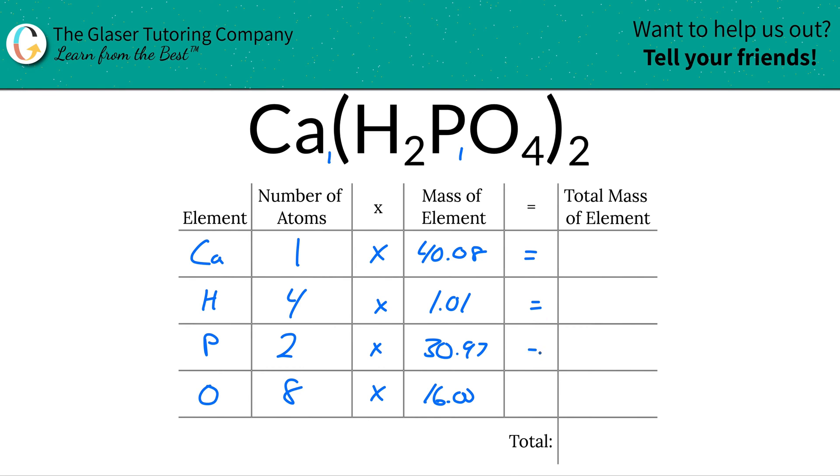To find the total mass of the element in the compound here, all you're simply going to do is multiply this row together. So to find the total mass of calcium now, it's simply 40.08 because it's just 40.08 times 1. For hydrogen it would be 4 times 1.01, so that's 4.04.